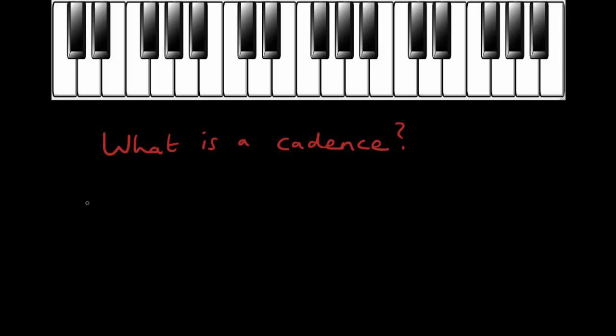Essentially, cadences are all about musical endings — that might be the end of a musical phrase, a section of a piece of music, or the entire piece of music altogether. There are lots of different types of cadence, but all of them give a sense that we've come to the end of something. It might be just a small part of the music or a much bigger, more significant part.